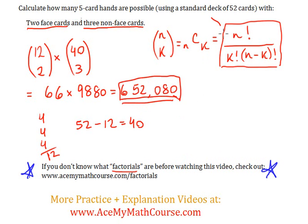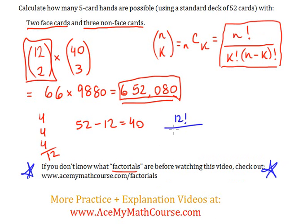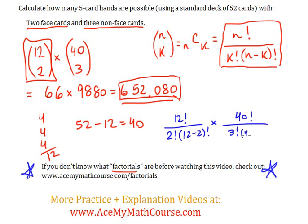But let's say that you needed to use factorials and use the formula. What I'm going to do is plug in — I'll change the color so everyone can see it better. It'll be 12 factorial over k factorial — k in this case is 2 — times n minus k, so 12 minus 2 factorial. Then times 40 combination 3, which would be 40 factorial over 3 factorial, because k is 3, times 40 minus 3 factorial.